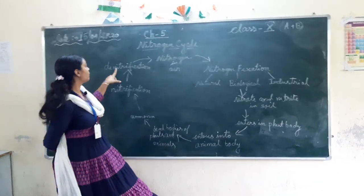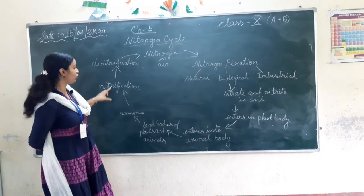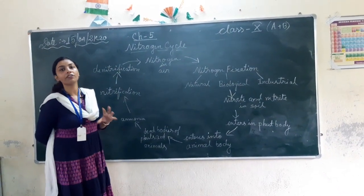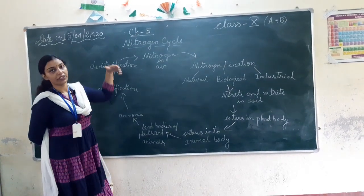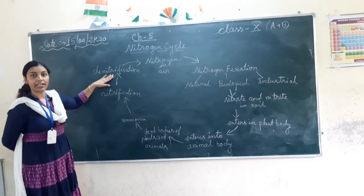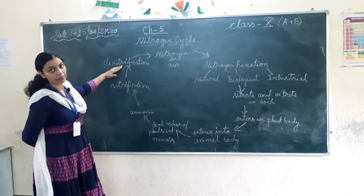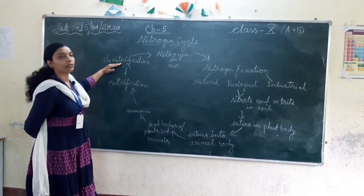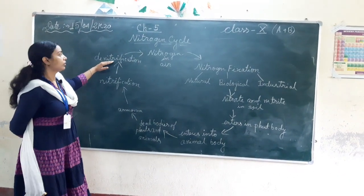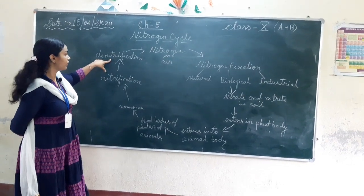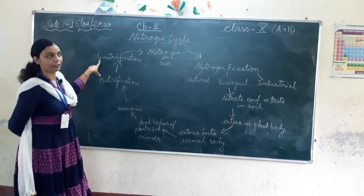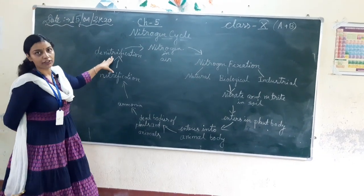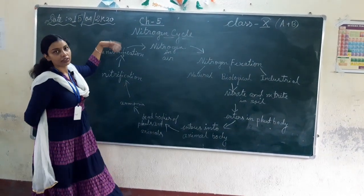After this process comes denitrification. In this process, the soil that is rich in nitrogen reduces its soil fertility, or reduces its capacity to retain nitrogen, and the nitrogen goes back into the air. Many types of bacteria also help in the process of denitrification. An example of the bacteria that helps in denitrification is Thiobacillus. After denitrification, the nitrogen in the soil converts back into nitrogen gas that goes into the air.